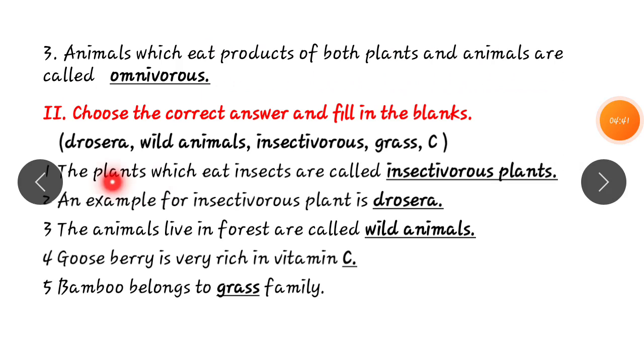Next, the plants which eat insects are insectivores plants. An example for insectivores plant is drosera, cobra lily, pitcher plant, sundew plant. They are examples for insectivores plants. The animals live in forest are wild animals. Gooseberry is rich in vitamin C. Bamboo belongs to grass family.